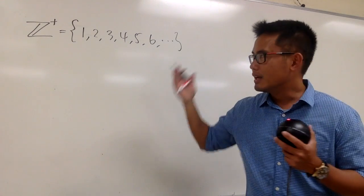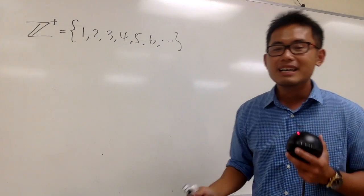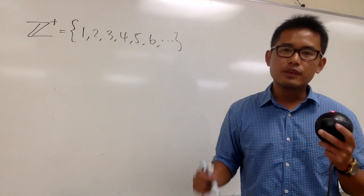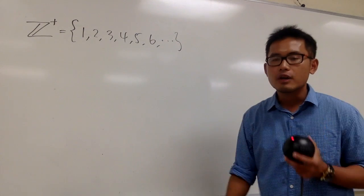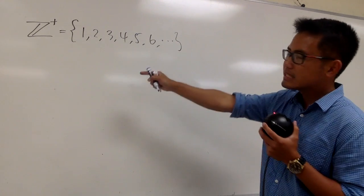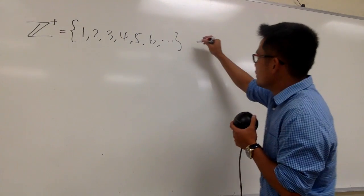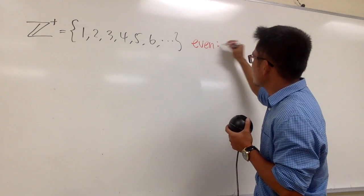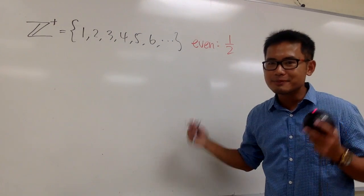It's also a well-known fact that an integer is either even or odd. So if you ask yourself: what percent of the positive integers is even? Well, we know this is going to give us 1 half, or 50%.